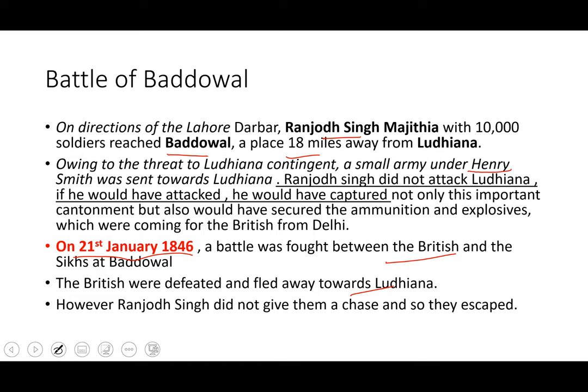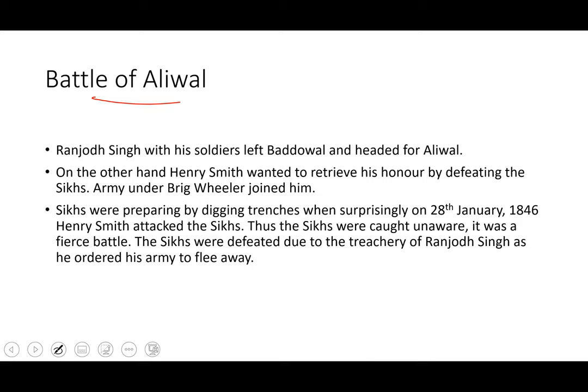In the Battle of Aliwal, since Ranjodh Singh did not follow the retreating British, Henry Smith wanted to retrieve his honor by defeating the Sikh army. He was joined by Brigadier Wheeler. The Sikh were preparing for war by digging trenches when, surprisingly, on 28th January 1846, Henry Smith attacked the Sikh. The Sikh were caught unaware; it was a fierce battle. The Sikh were defeated due to the treachery of Ranjodh Singh, who ordered his army to flee.